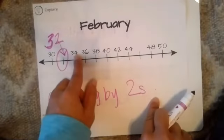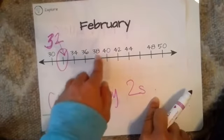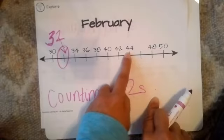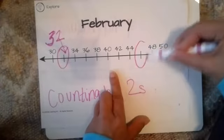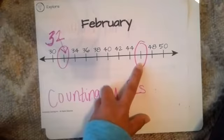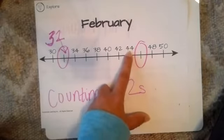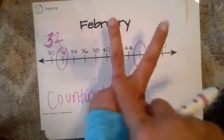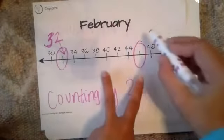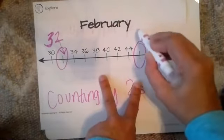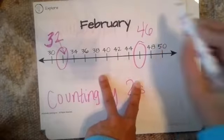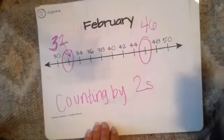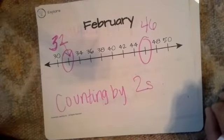32, 34, 36, 38, 40, 42, 44 — there's another missing number. Let's count by twos: 44, 46. Remember I'm going to count by twos, so this number is 46, then 48, 50. Great job.